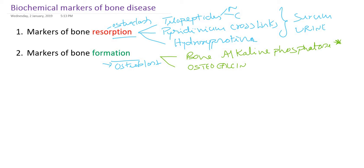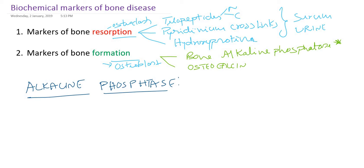So what is alkaline phosphatase? It is an enzyme which hydrolyzes organic phosphate or phosphate esters at alkaline pH. The optimum pH is between 9 to 10. It hydrolyzes organic phosphates generating inorganic phosphate, thereby helping in mineralization or calcification of the bone. This enzyme is a metalloenzyme, meaning it contains zinc - this enzyme is always associated with zinc.